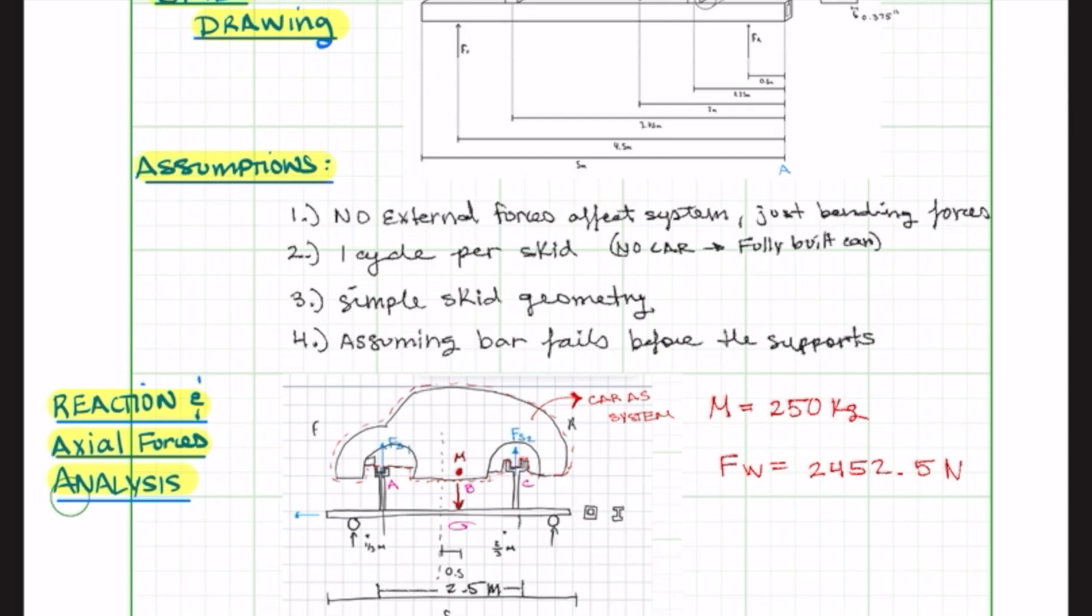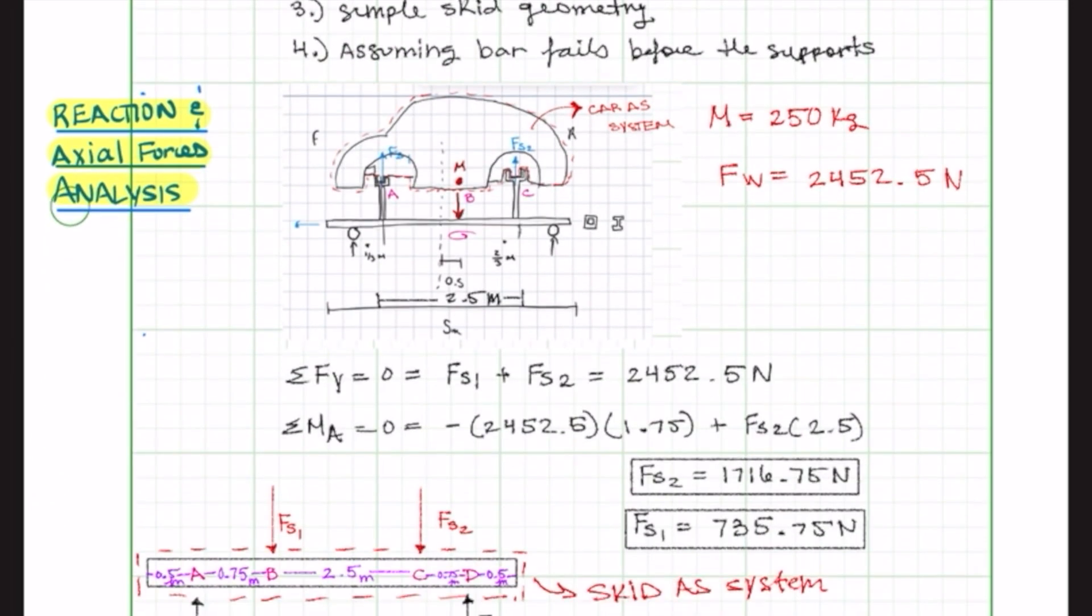Assumptions: there are no external forces to affect the system, just bending forces; there's one cycle per skid; simple skid geometry; and we're assuming that the bar fails before the supports.